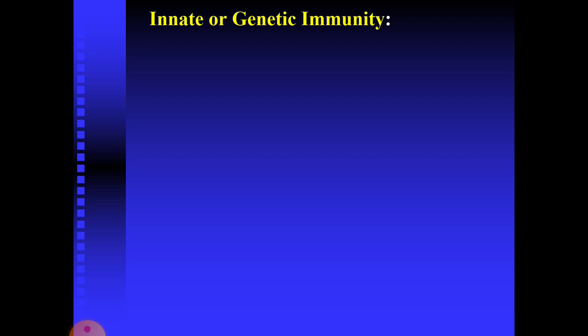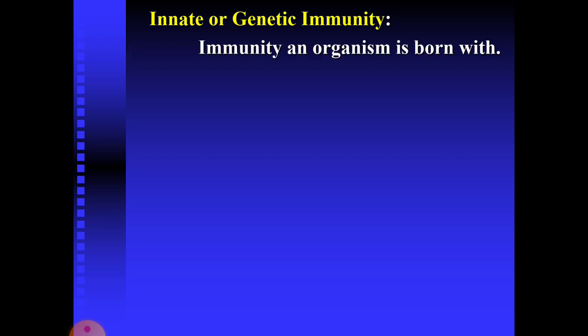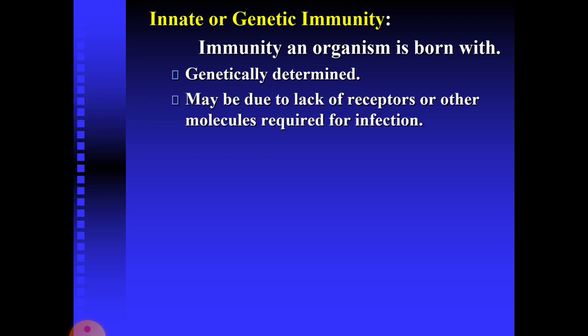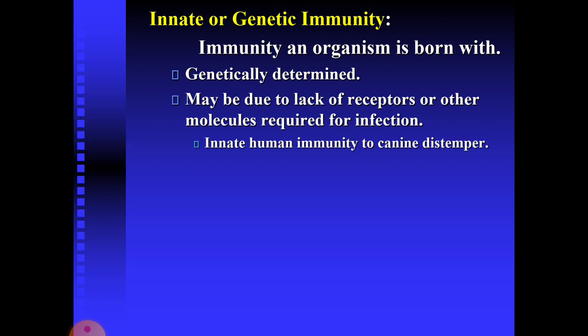Moving on to types of immunity. Immunity has both non-specific and specific components. The non-specific component is known as innate immunity or genetic immunity — a set of disease-resistant mechanisms that are not specific to a particular pathogen. Innate immunity is the immunity an organism is born with; it is genetically determined and may be due to lack of receptors or other molecules required for infection. Examples include human immunity to canine distemper and immunity of mice to poliovirus.